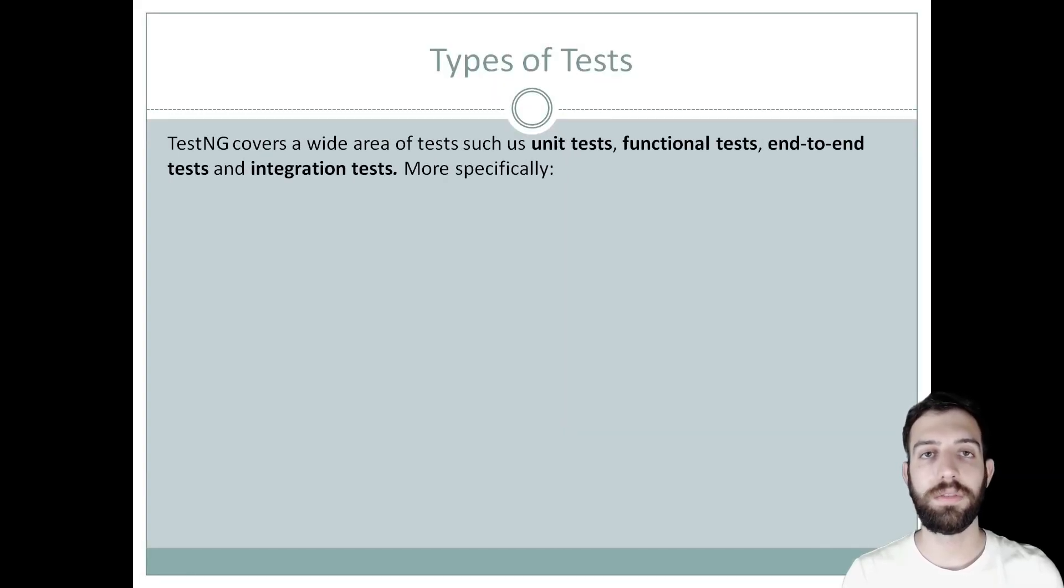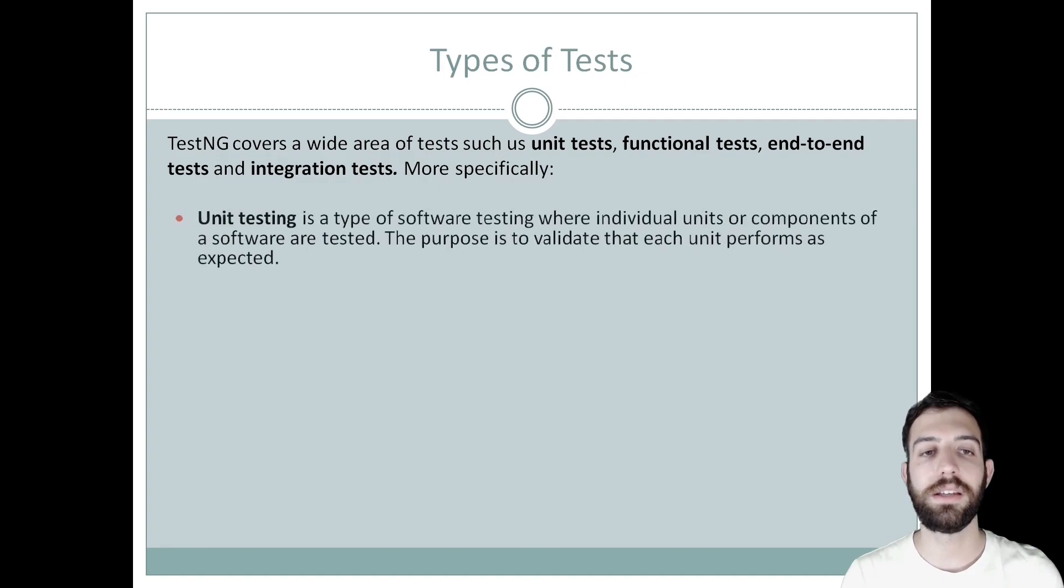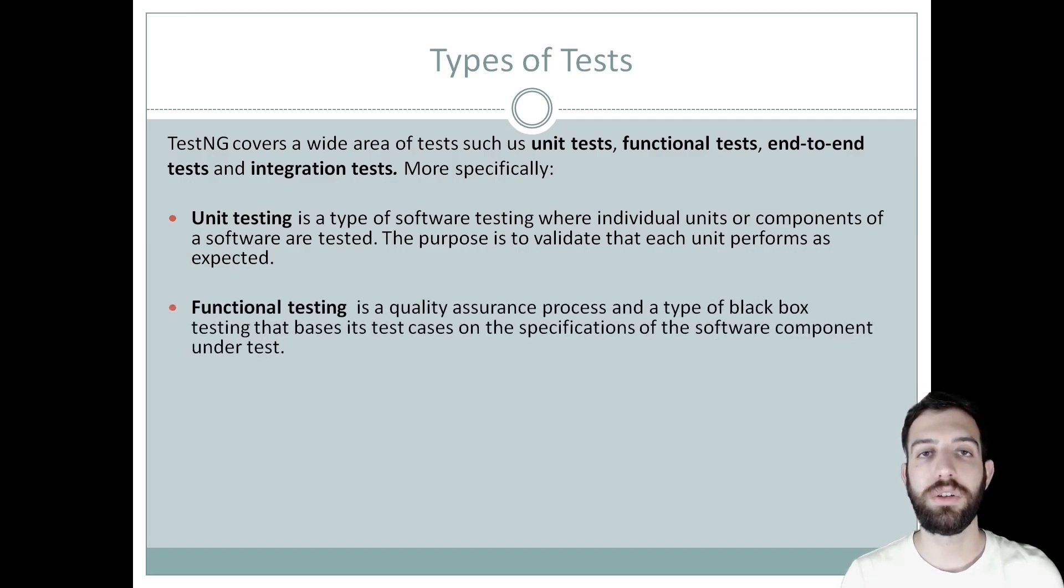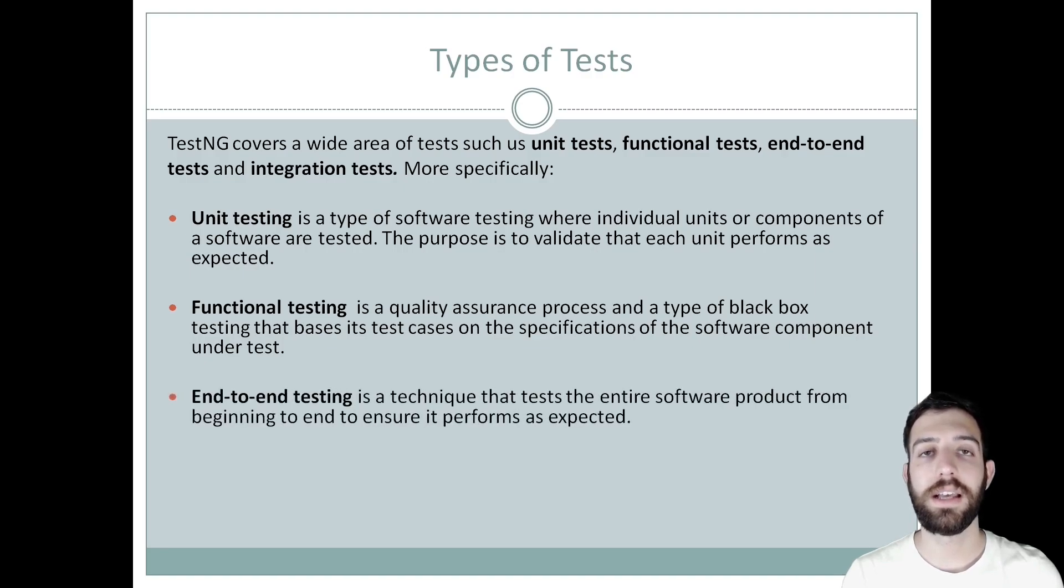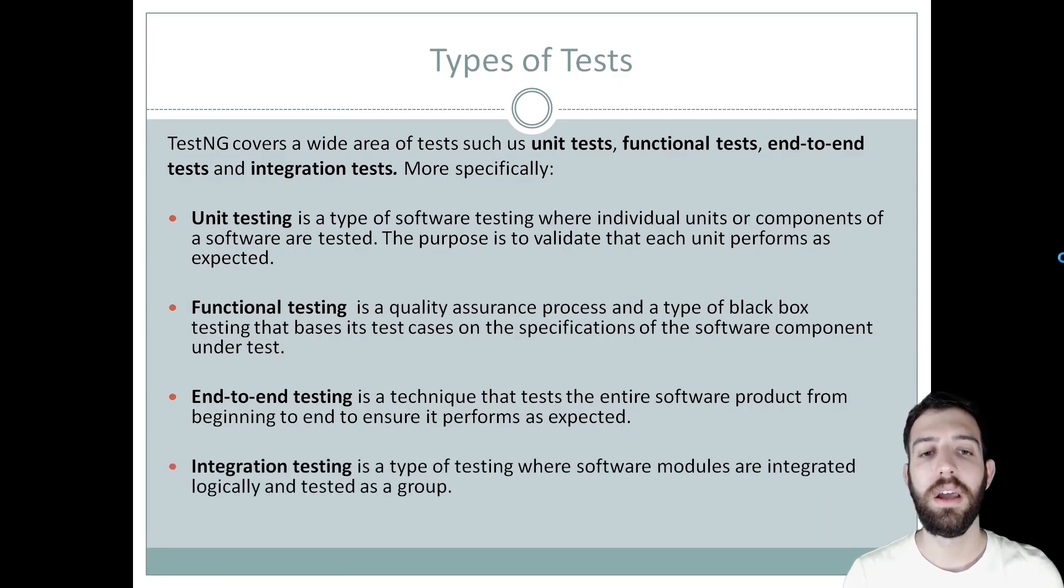TestNG covers a wide area of tests, such as unit tests, functional tests, end-to-end tests and integration tests. More specifically, unit testing is a type of software testing where individual units or components are tested. The purpose of this is to validate that each unit or component performs as expected. Secondly, is functional testing, which is a quality assurance process and type of black box testing that bases its test cases on the specifications of the software component under tests. Furthermore, end-to-end testing is a testing technique that tests the entire software from beginning to end to ensure that it performs as expected. And last is integration testing, which is a type of testing where software modules are integrated locally and tested as a group.